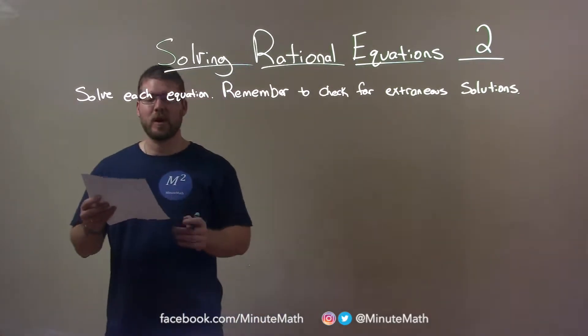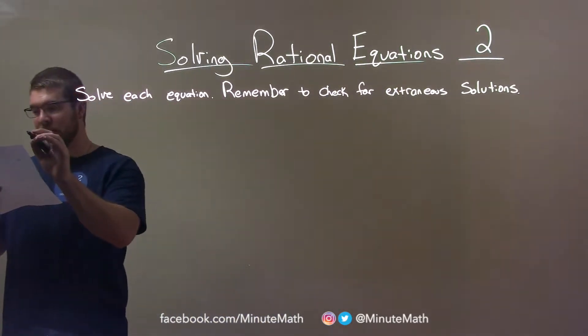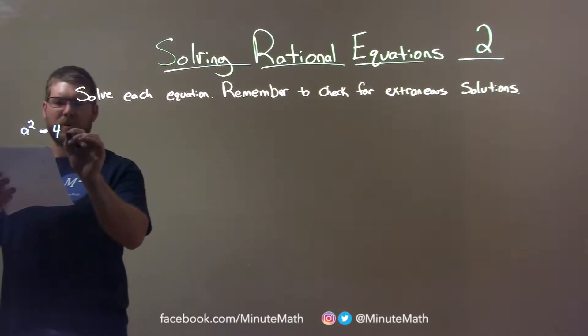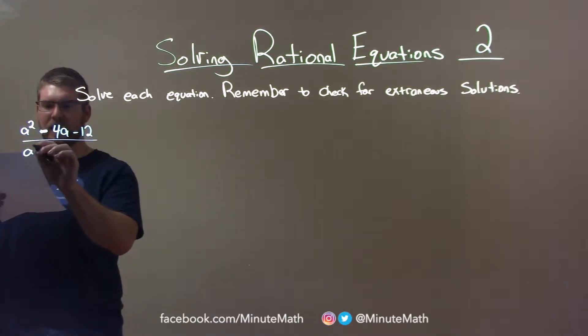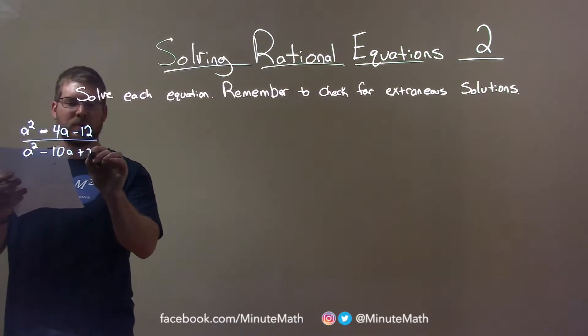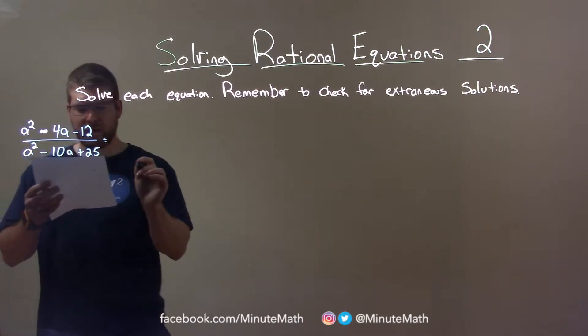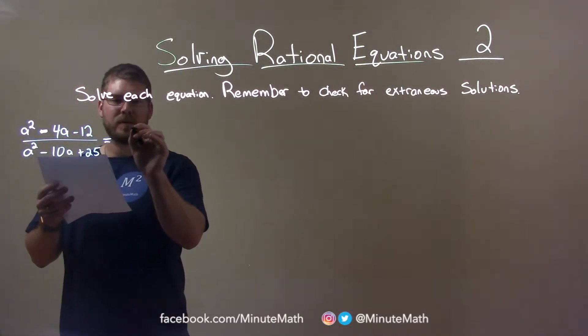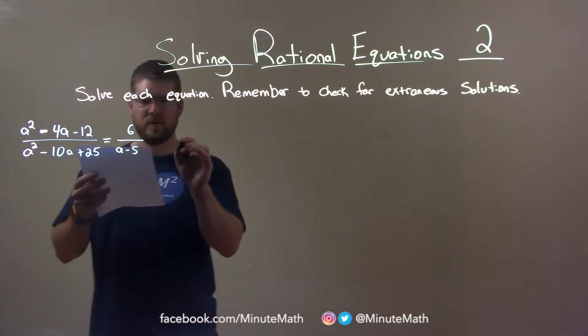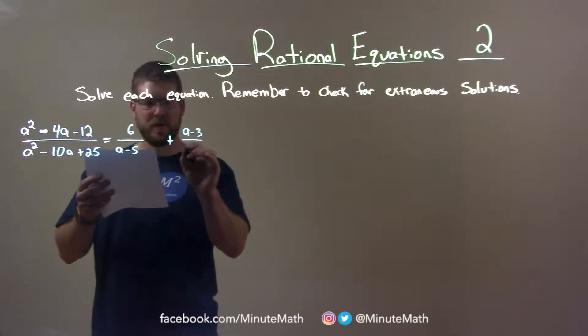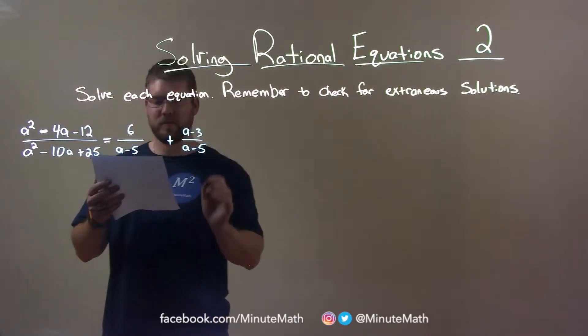If I was given this problem: a squared minus 4a minus 12 over a squared minus 10a plus 25 is equal to 6 over a minus 5 plus a minus 3 over a minus 5.